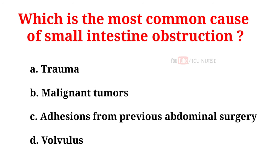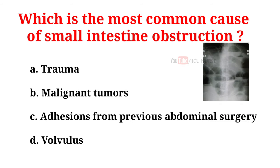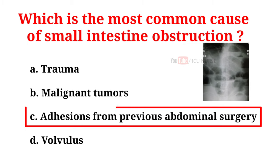Which is the most common cause of a small intestine obstruction? A. Trauma. B. Malignant tumors. C. Adhesions from previous abdominal surgery. D. Volvulus. And the correct answer is C. Adhesions from previous abdominal surgery.